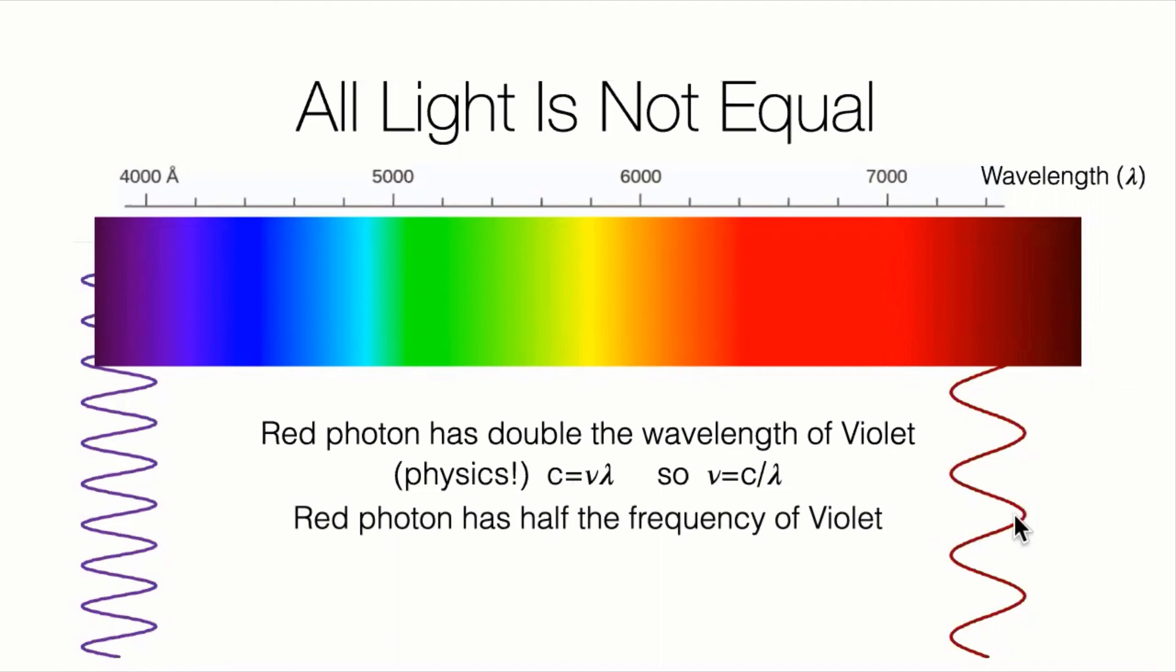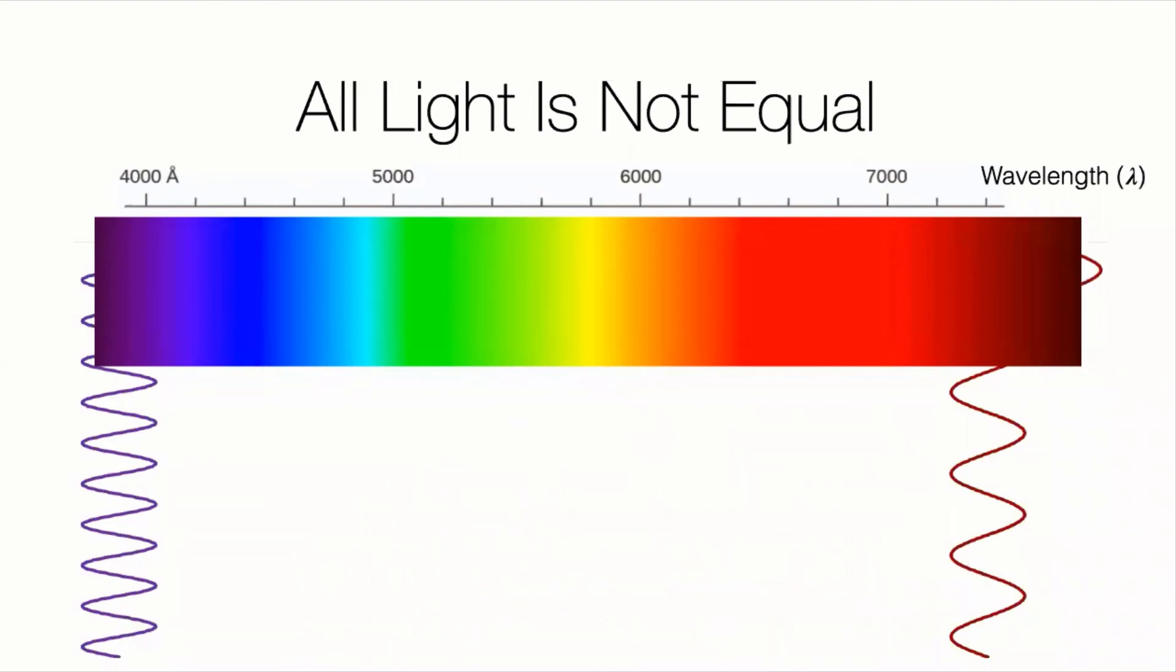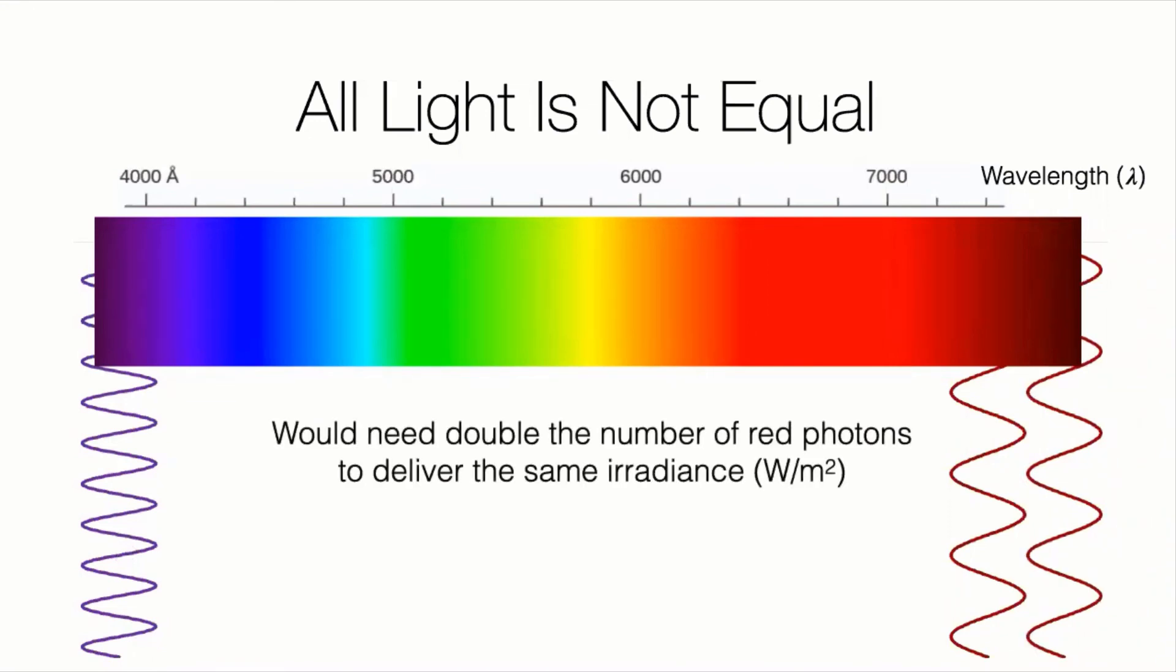So the red photon has half the frequency of the violet. And now some more physics turns out from our friend, Max Planck, that the energy of a photon is equal to H times the frequency, H times nu. H is just a number. It's just a constant. So the point is that the energy is proportional to the frequency, higher frequency light, more energy in that light, in that photon, lower frequency, lower energy. So that's why we think of ultraviolet, high frequency light being very energetic. It can go into your skin, cause cancer, stuff like that. So if the red photon has half the frequency, the red photon has half the energy of the violet. So photon to photon, they don't carry the same amount of energy. So it turns out that you need double the number of red photons to deliver the same irradiance, the same watts, as you would from the number of violet photons. And let's put this into practice.